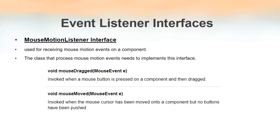The next listener interface is MouseMotionListener, used for receiving mouse motion events such as whether the mouse is dragged or moved. This listener interface consists of two methods: mouseDragged and mouseMoved. Once the component is registered with this MouseMotionListener using the corresponding registration method, whenever the mouse is dragged or moved inside that component the corresponding method will be called automatically. We can write the lines of code inside these methods which we want to execute whenever a mouse is dragged or moved.